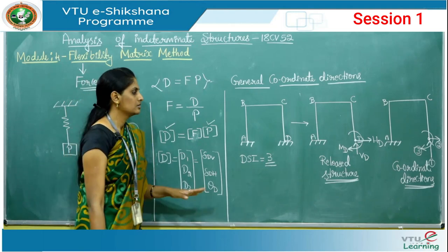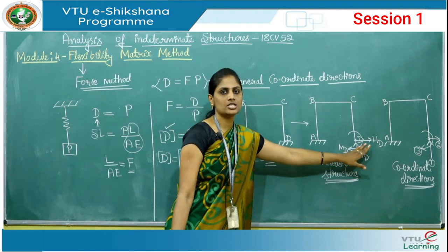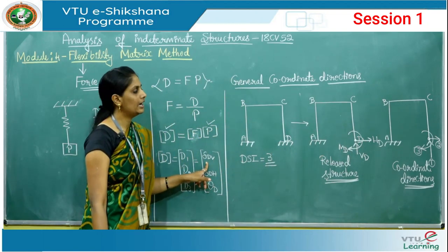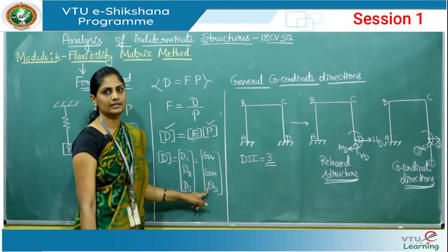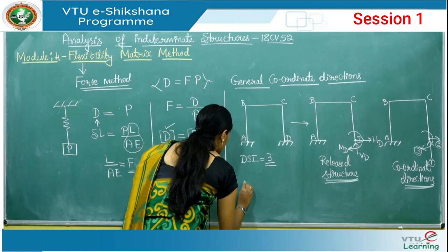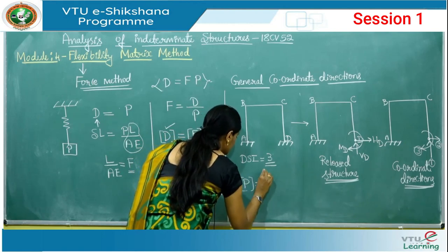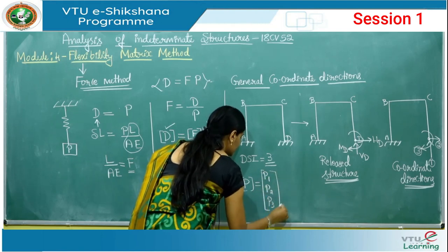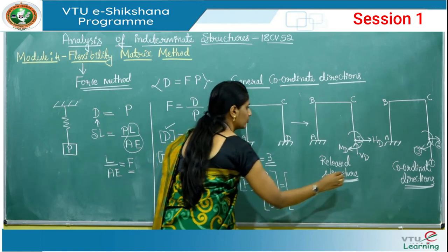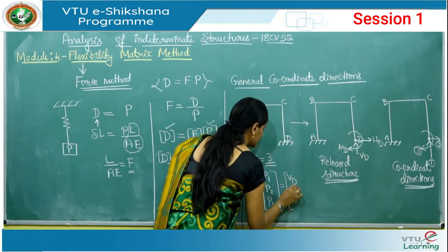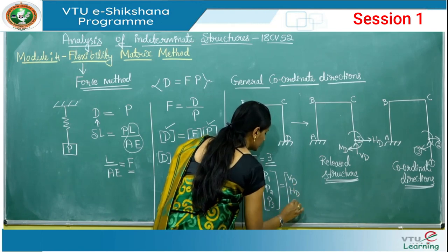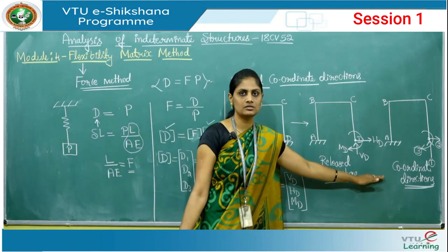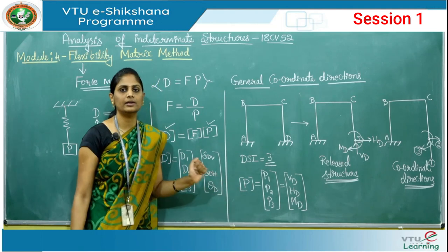Forces in vertical and horizontal directions give deflection or displacement called delta, and because of the moment we get the rotation term theta. Similarly, we write the force vector P. Since there are 3 coordinates, we get P1, P2, and P3 — corresponding to VD, HD, and MD respectively. Like this, we mark coordinate directions to get the force and displacement vectors.